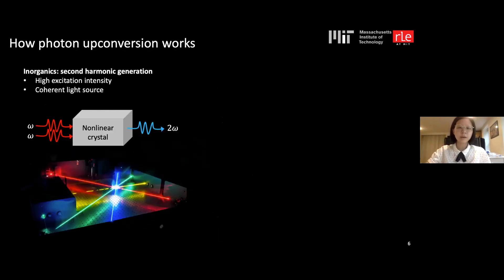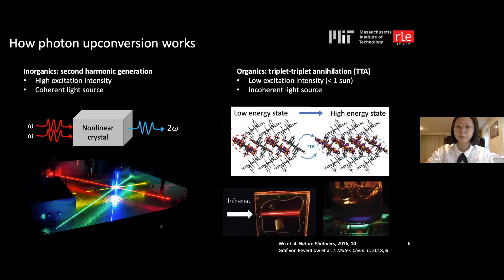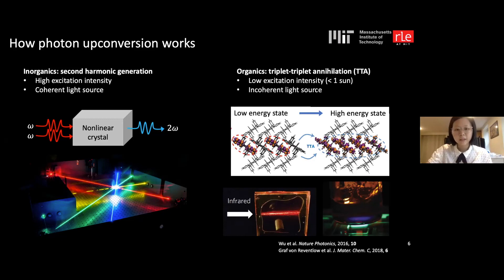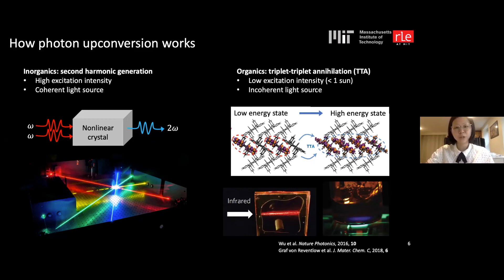There are two main ways to achieve photon upconversion: through second harmonic generation in inorganic crystals, or through triplet-triplet annihilation in organic small molecules. We prefer organics because triplet-triplet annihilation can be excited by low-intensity, non-coherent light. As shown, this green-to-blue upconverter is excited by just a green LED, making it very practical.